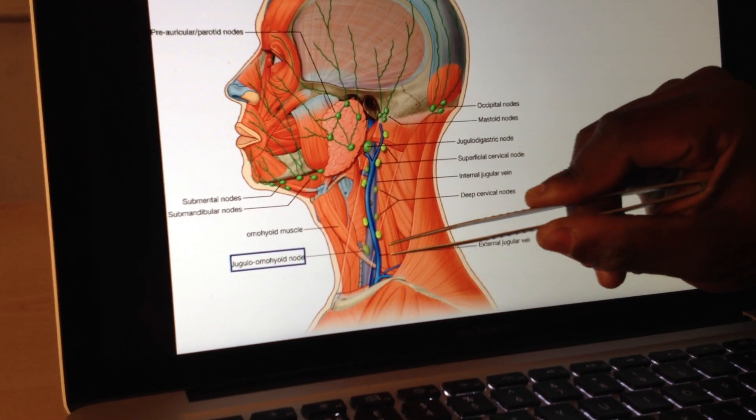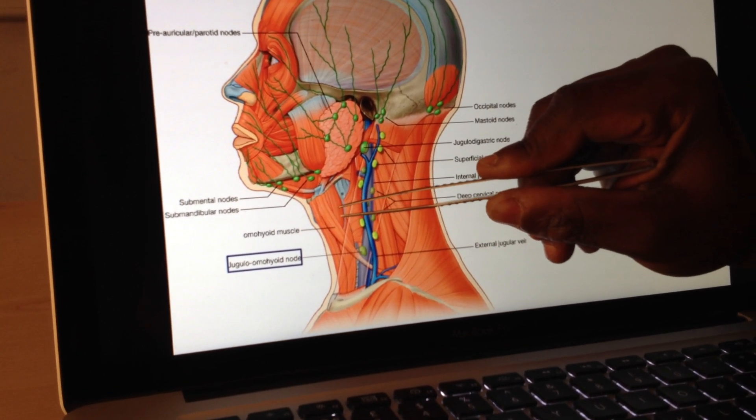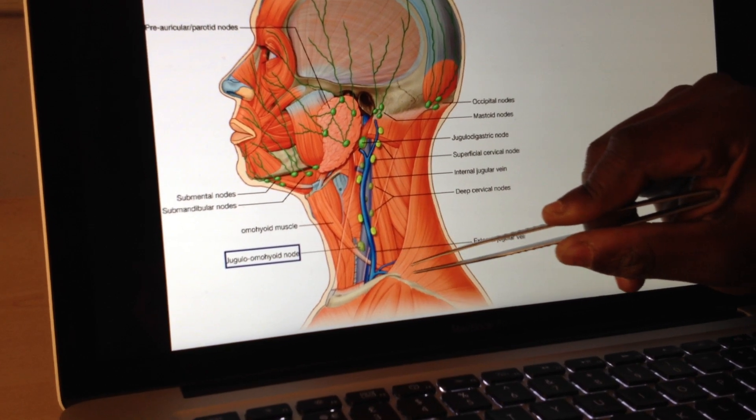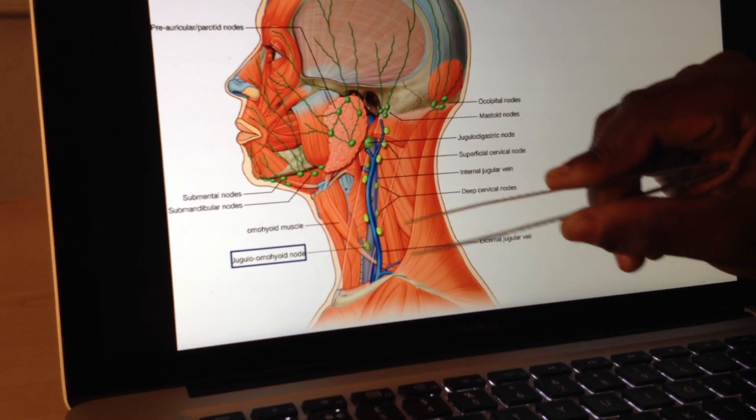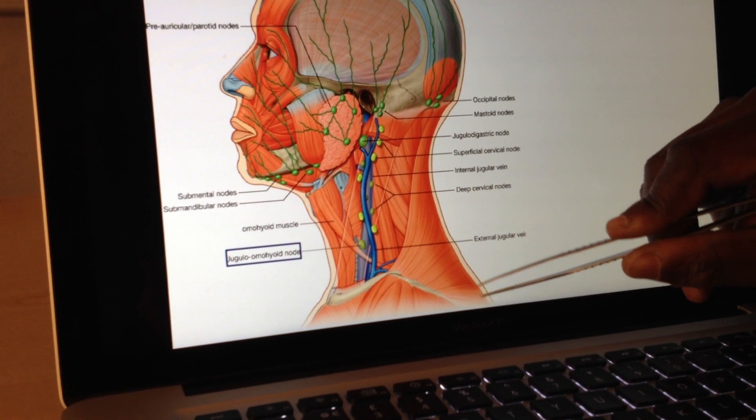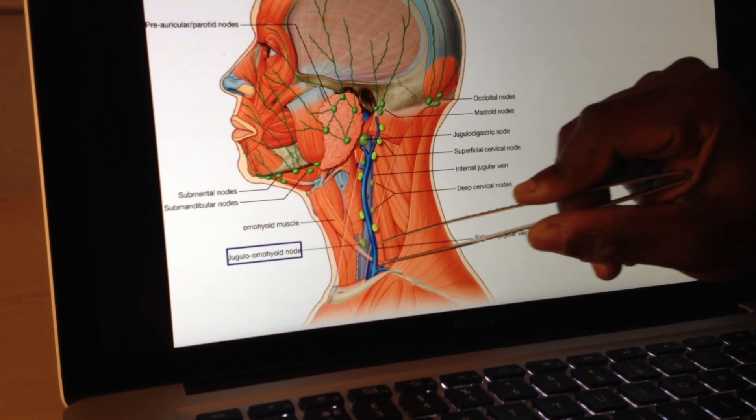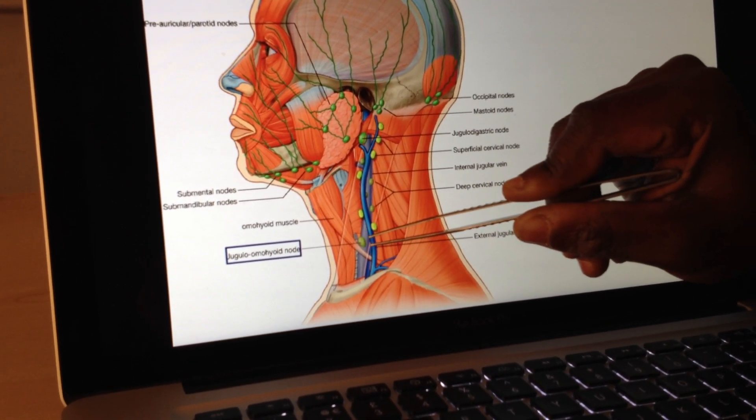And then we get down here, and we've got this muscle which is forming like a strap around here, and then down to the shoulder. It's going from the hyoid to the shoulder, which is the omohyoid muscle. And that's jugular and the hyoid node.